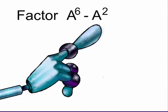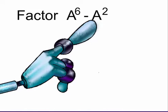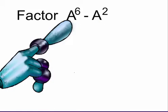In this case, a squared is the greatest common factor because a squared goes into a squared, obviously, and a squared goes into a to the sixth.